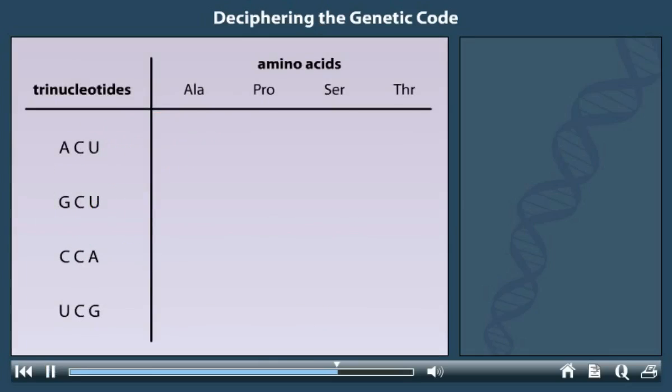Nirenberg and colleagues went on to characterize a number of trinucleotides, only a subset of which are shown here. The scientists found that threonine-charged tRNAs bind to ACU, alanine-charged tRNAs bind to GCU, proline-charged tRNAs bind to CCA, and serine-charged tRNAs bind to UCG.